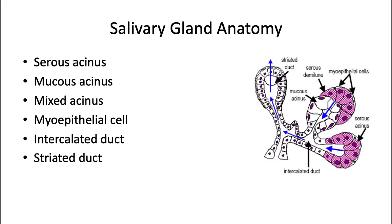We're going to start with some basic salivary gland anatomy. The term acinus is pretty important — it refers to a sac-like cavity that produces our salivary secretions. The serous acinus produces a watery type secretion. It contains only serous cells, pictured here in a pink-purple color. They're generally spherical in shape, and this is an example of an acinus producing serous secretion.